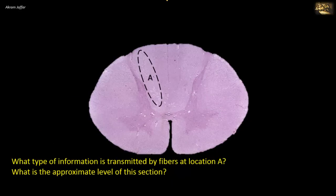What type of information is transmitted by fibers at location A, and what is the approximate level of this section? The fibers are located in the dorsal funiculus — specifically, they are laterally located, making them fibers of the fasciculus cuneatus. Whether fasciculus cuneatus or the medially located fasciculus gracilis, both tracts in the dorsal funiculus convey sensations of discriminative or fine touch, proprioception (position sense), and vibration.